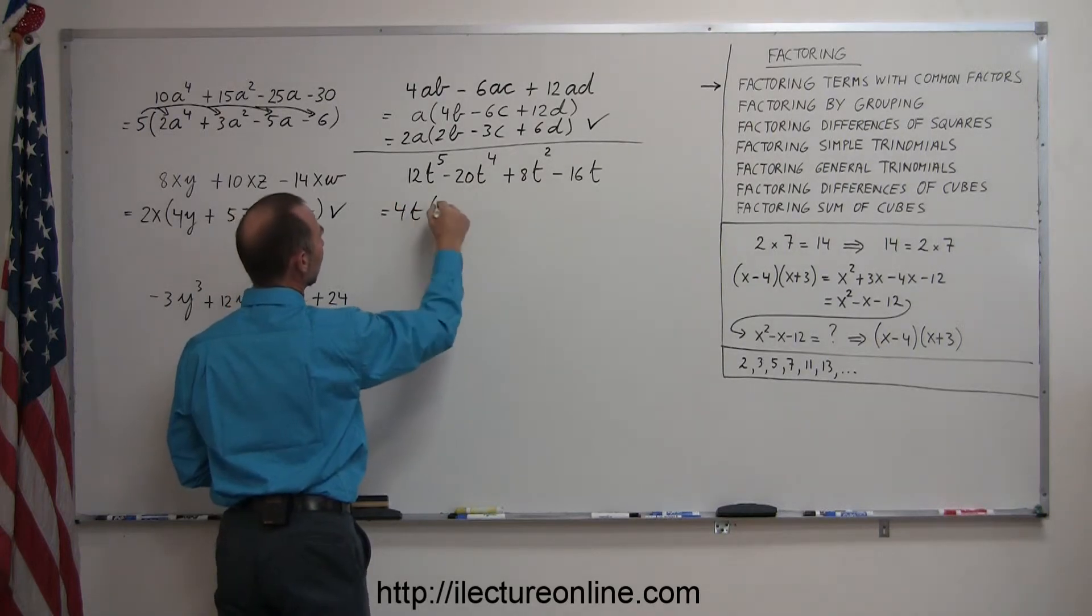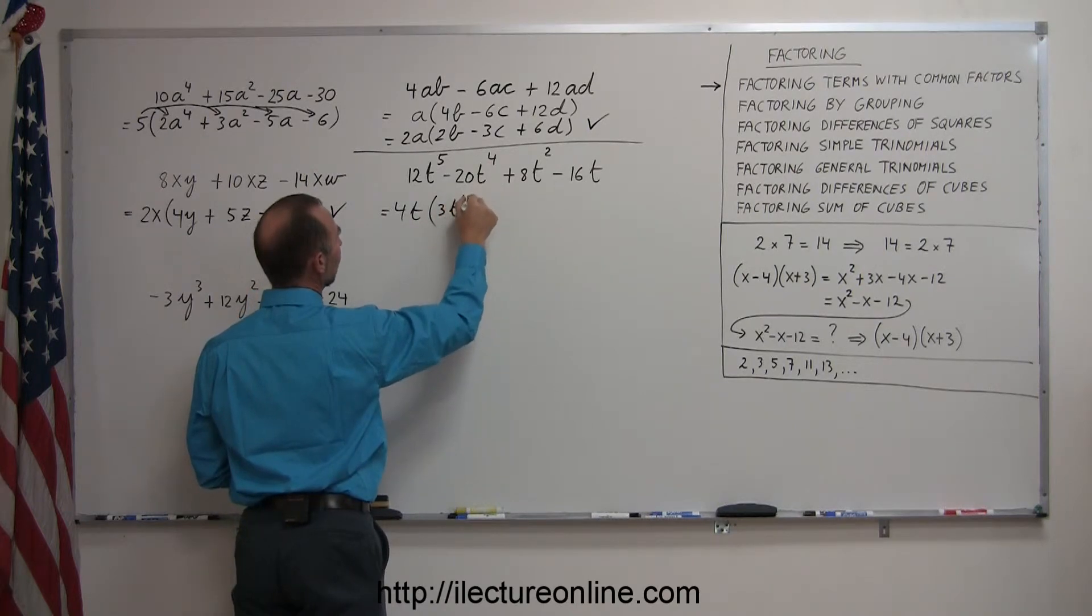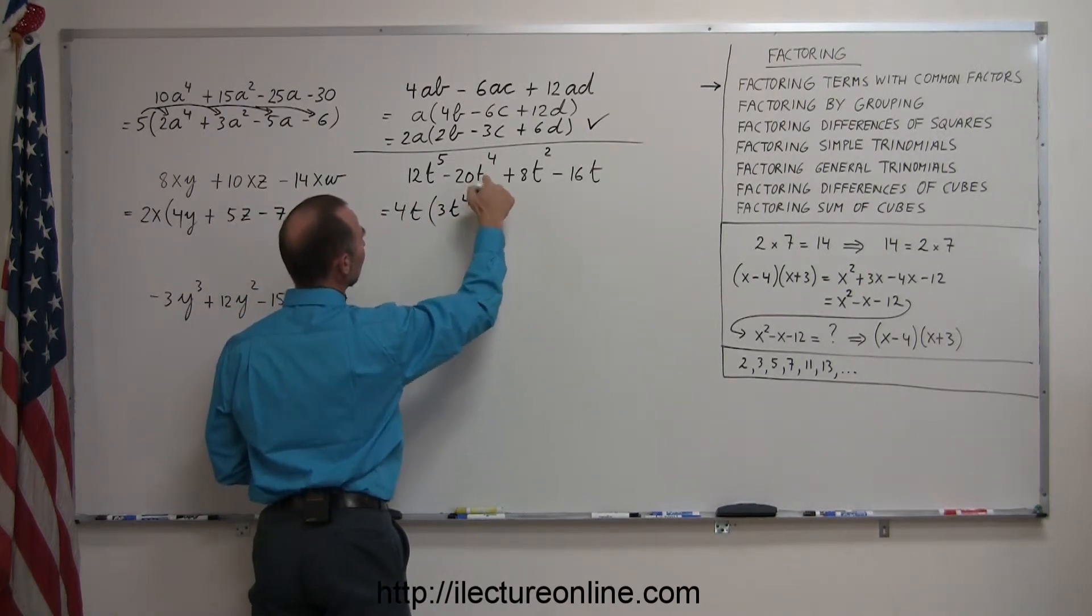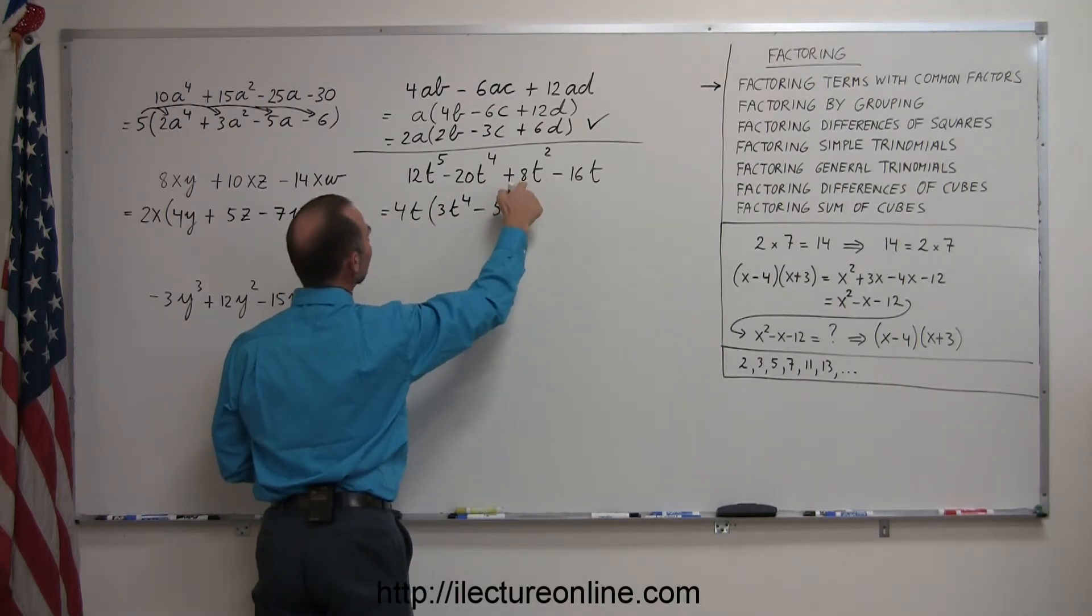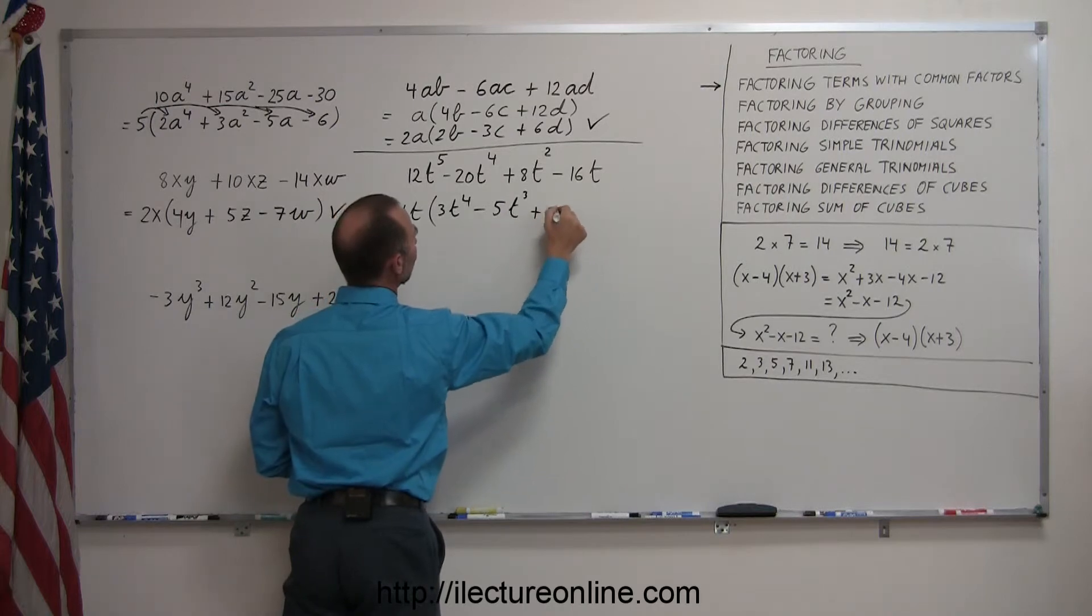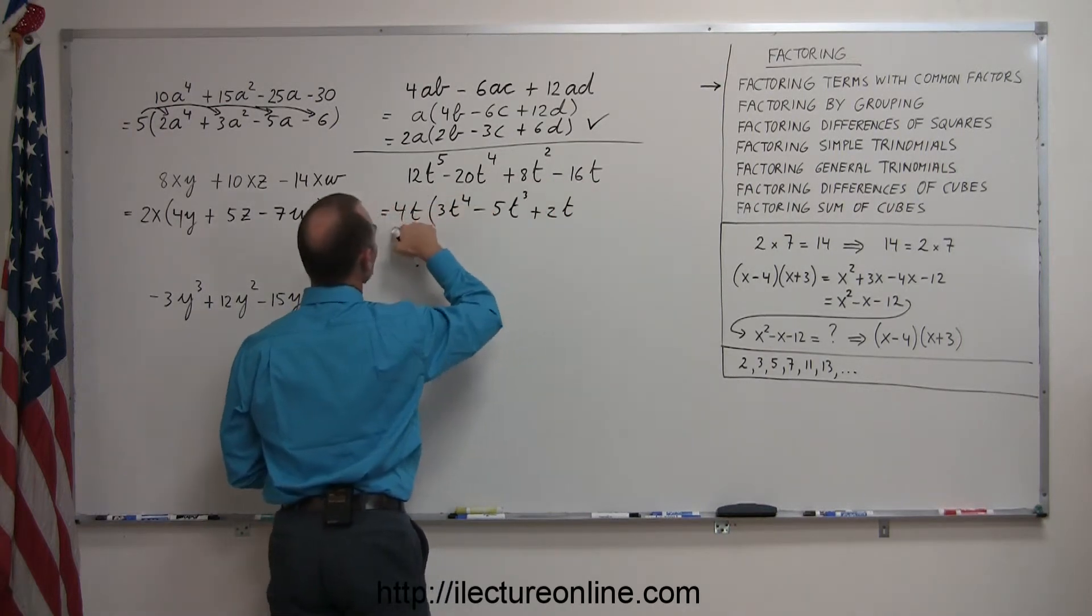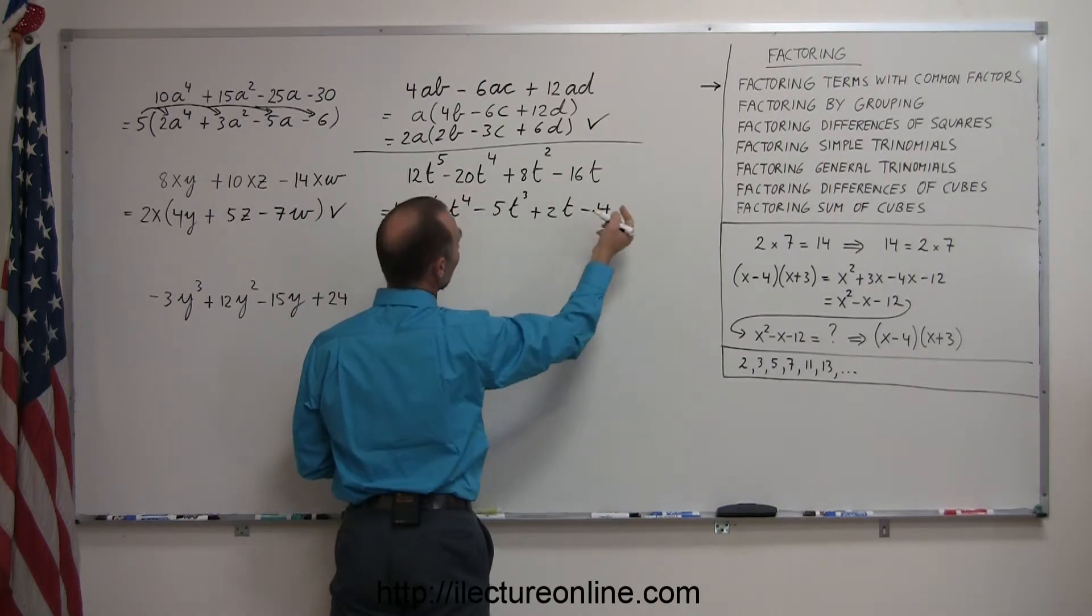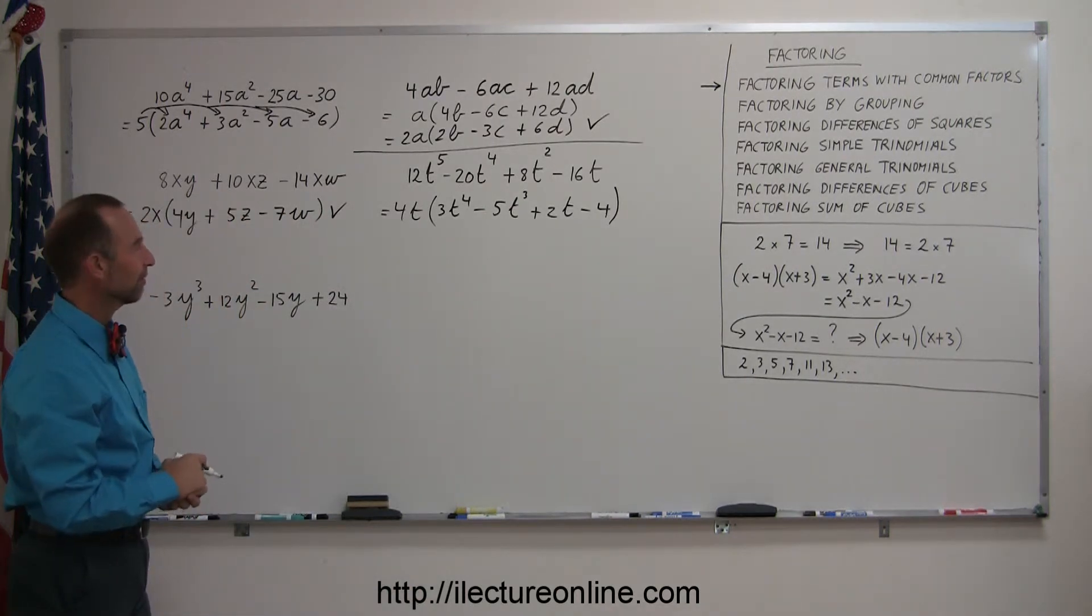If I divide 12 by 4, I get a 3. t to the fifth divided by t, that gives me t to the fourth minus 20 divided by 4 is 5. t to the fourth divided by t is t cubed. 8 divided by 4 is 2. t squared divided by t gives me a t, and 16 divided by 4 is 4, don't forget the minus sign, and t divided by t is 1, so I just leave it like that, and there's my factored form. So, in this case, I factored out a 4 and a t.